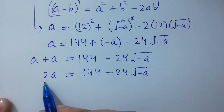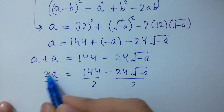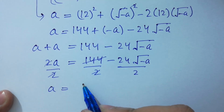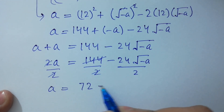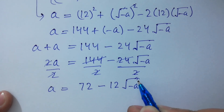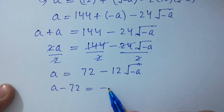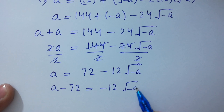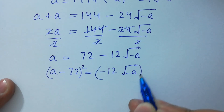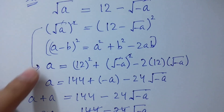Divide both sides by 2. The 2s will cancel. A equals 144 divided by 2 minus 12 square root of minus a. So a minus 72 equals minus 12 square root of minus a. Again, take square on both sides. Apply the formula of a minus b whole square.